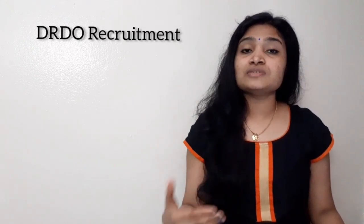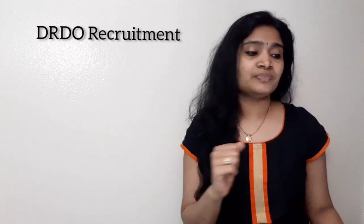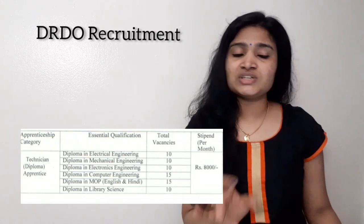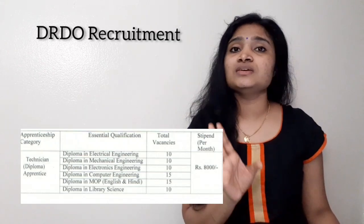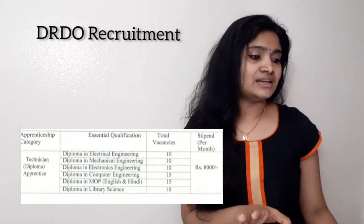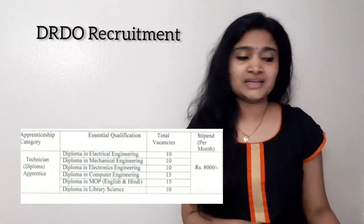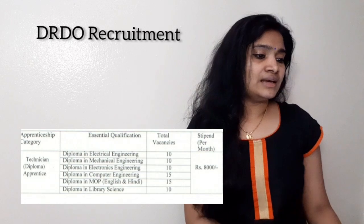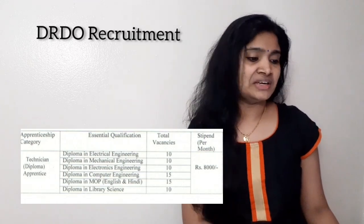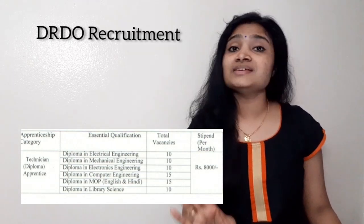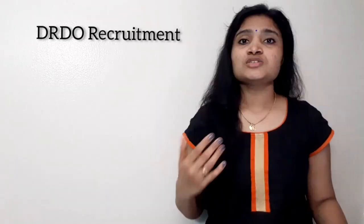The recruitment is happening for the post of technician or diploma apprentice. The branches they are recruiting are: electrical engineering with 10 vacancies, mechanical engineering with 10 vacancies, electronics engineering with 10 vacancies, computer engineering with 15 vacancies, MOP - that is English and Hindi - with 15 vacancies, and diploma in library science with 10 vacancies.